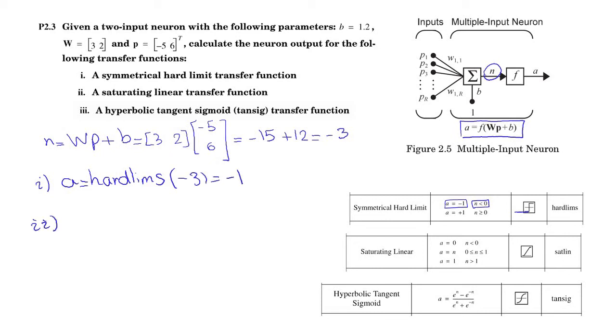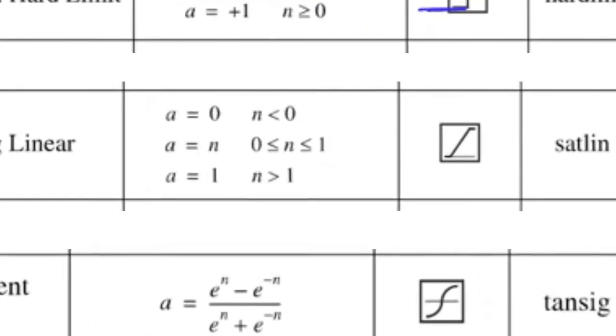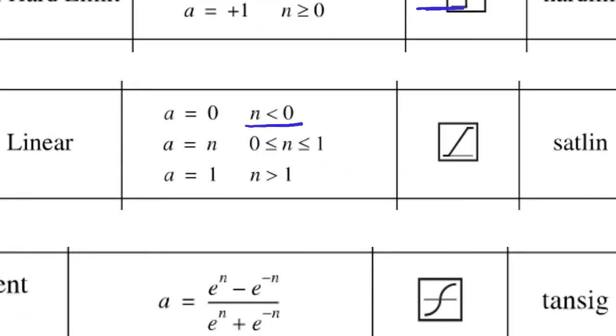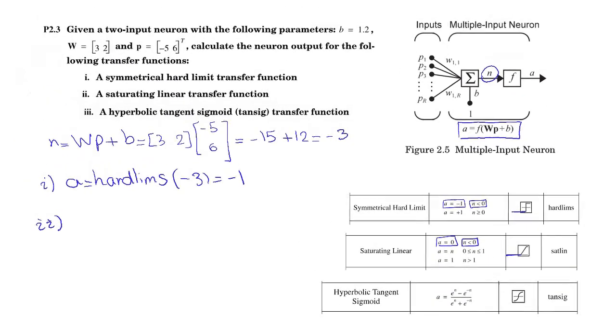For the second one, it's saturating linear transfer function. So, for N equals less than 0, A equals 0. So, A equals saturating SAT LIN minus 3 equals 0.